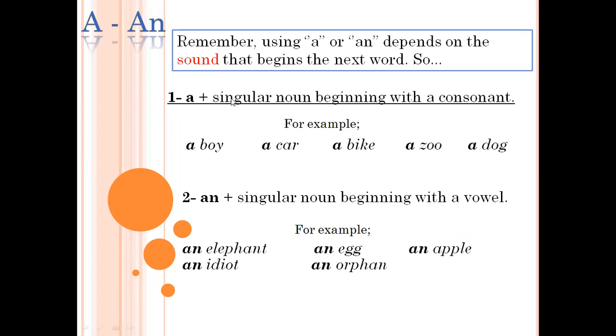A plus singular noun beginning with a constant. A boy, a car, a bike, a zoo, a dog. An is used also for a singular beginning with a vowel. A, E, I, O, U. For example, an elephant, an egg, an apple, an idiot, an orphan.